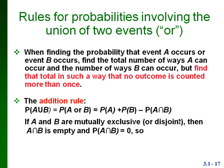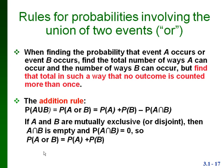Now if A and B are mutually exclusive — in other words, if they're disjoint sets with nothing in common — then their intersection is the empty set, and the probability of A intersection B is zero. So in that case, the probability of A union B is simply the probability of A plus the probability of B. This is something you always have to think about: whether A and B are mutually exclusive or not.